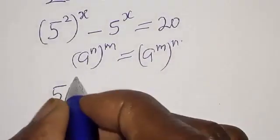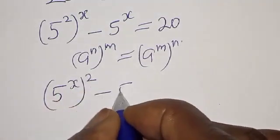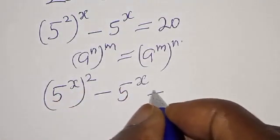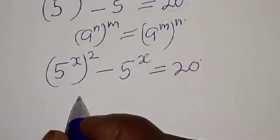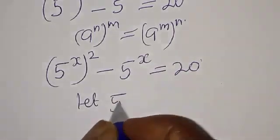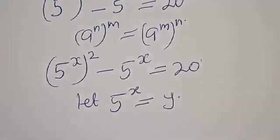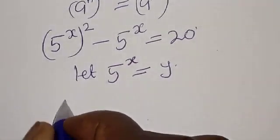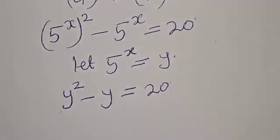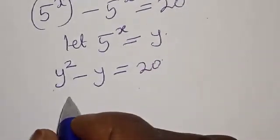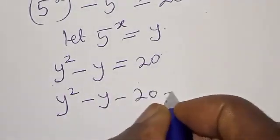So we have 5 raised to power 2x minus 5 raised to power x is equal to 20. Now let 5 raised to power x equal to y. Then we have y squared minus y is equal to 20. Bringing 20 to the left hand side, we have y squared minus y minus 20 is equal to zero.